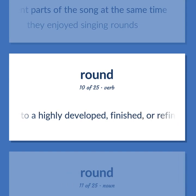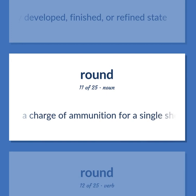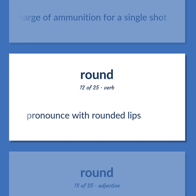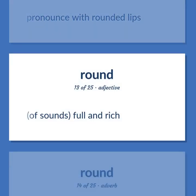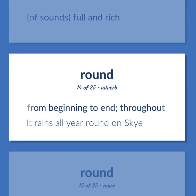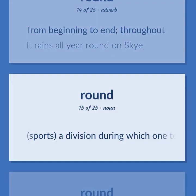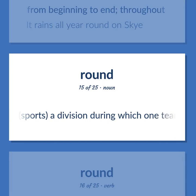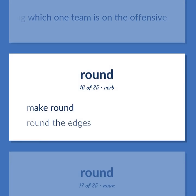Bring to a highly developed, finished, or refined state. A charge of ammunition for a single shot. Pronounce with rounded lips. Of sounds, full and rich. From beginning to end; throughout. It rains all year round. Sports: a division during which one team is on the offensive. Make round. Round the edges.